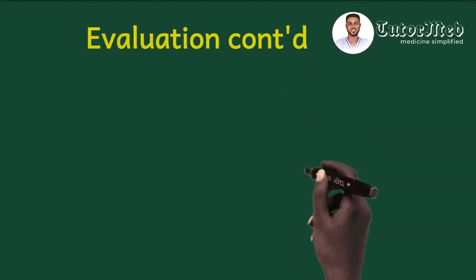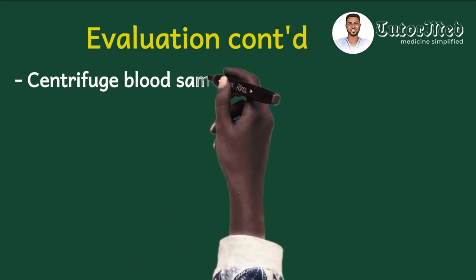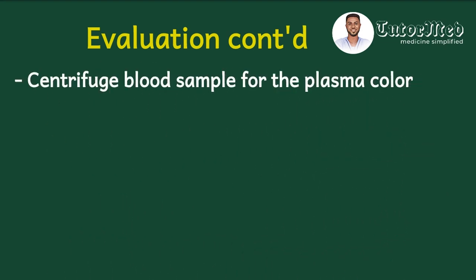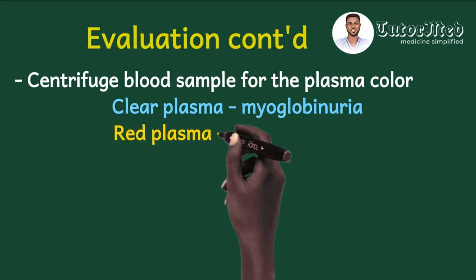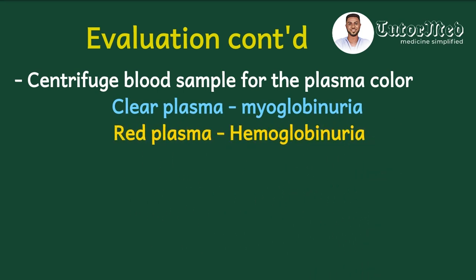If the supernatant is red and heme is positive, it is either myoglobinuria or hemoglobinuria. To differentiate, take a blood sample and centrifuge it for plasma. If the separated plasma is clear, it is myoglobinuria. If the plasma is red, it represents hemoglobinuria. The next explanation will clarify why.